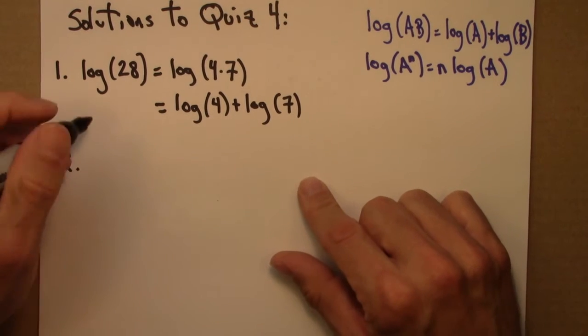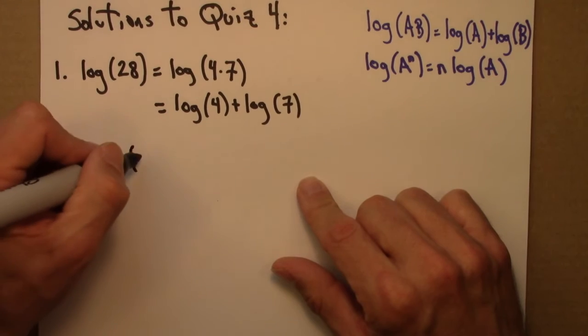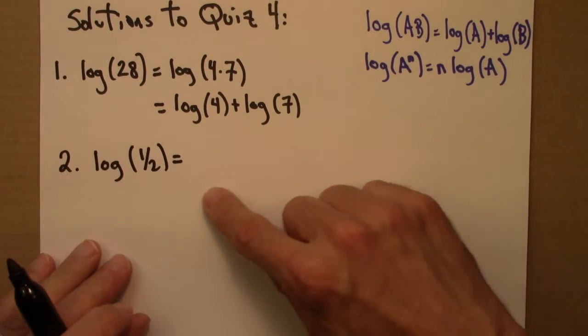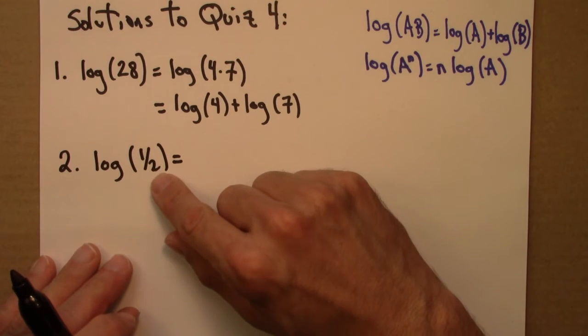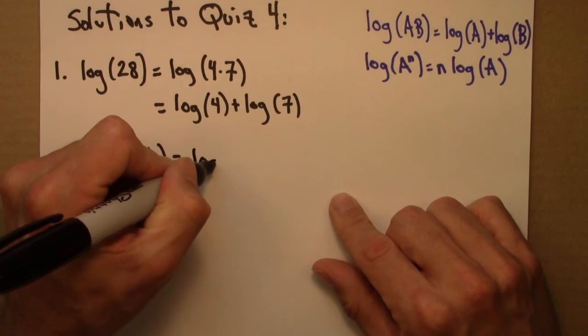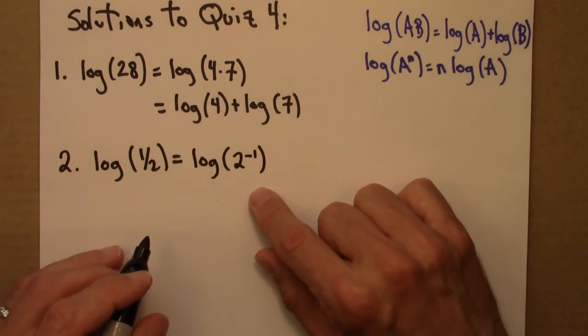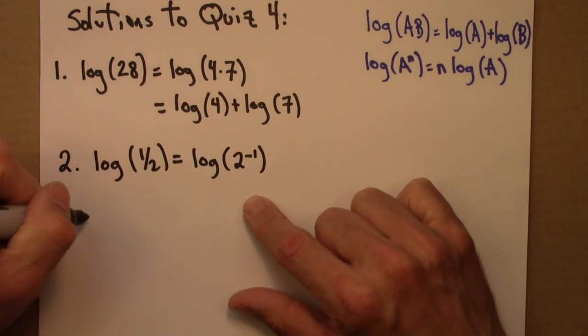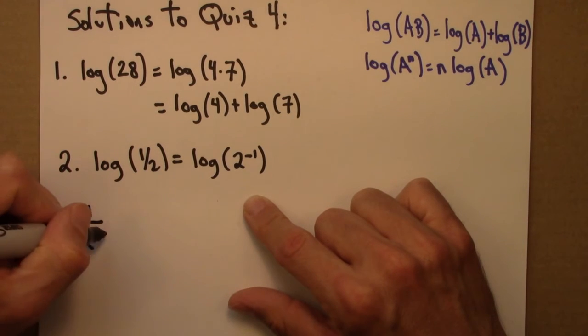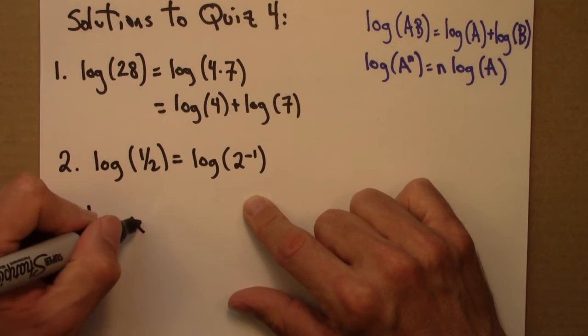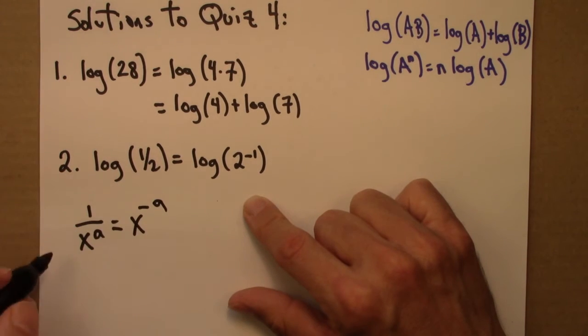Okay, next question is about log of a half. And to do this I remind myself that a half is the same thing as 2 to the minus 1. And that's from the exponent property. 1 over x to the a is x to the minus a. So 1 over 2 to the 1 is 2 to the minus 1.